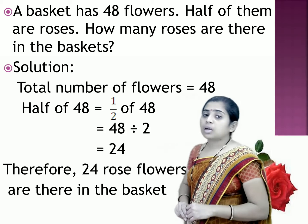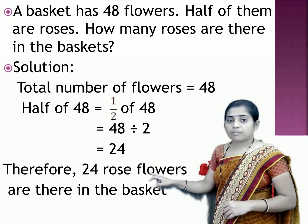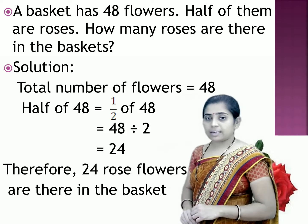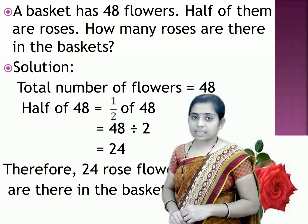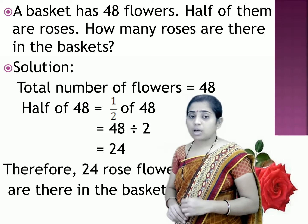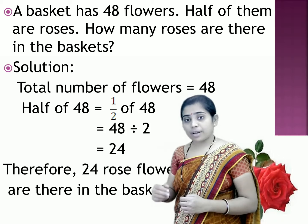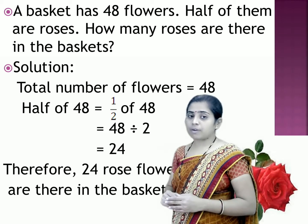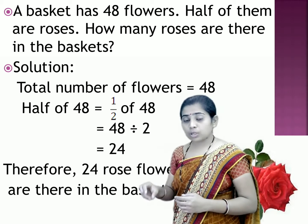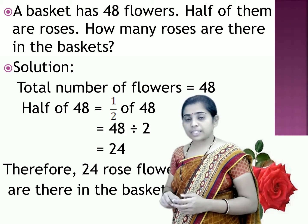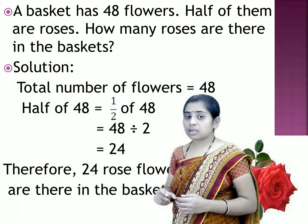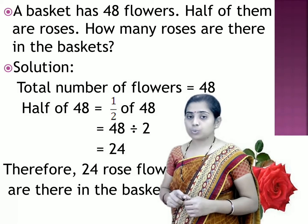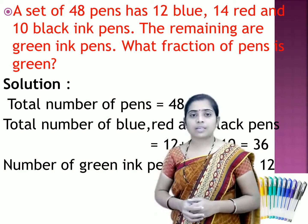Therefore, 24 rose flowers are there in the basket. To find out half of any collection, we need to divide the total number of objects in the collection by 2. Let us take one more example.